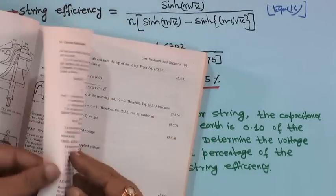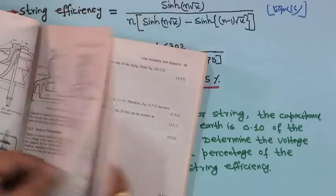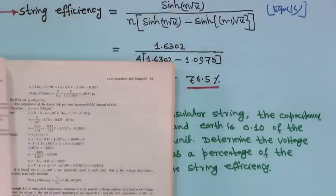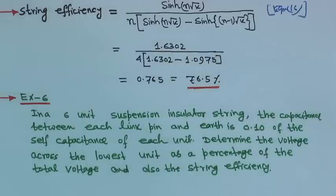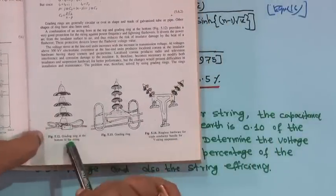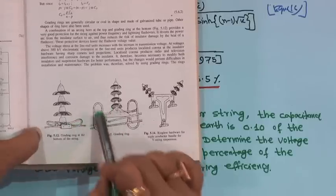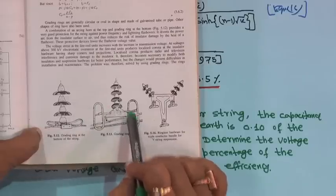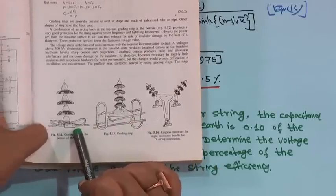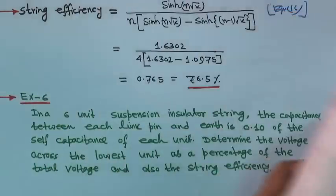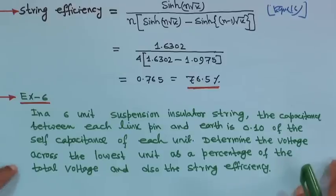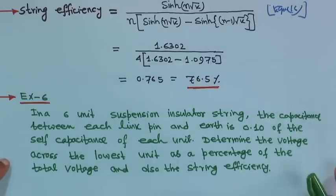This is your V string, and the grading ring — whatever numericals we have done for grading ring — I am showing just before proceeding to the next example. Different types of grading rings are there. Look, this is not a photograph but a drawing. The grading ring is at the bottom of the string, and here also a different type of grading ring is there. This is how, if you look at a transmission tower, you will find these things.